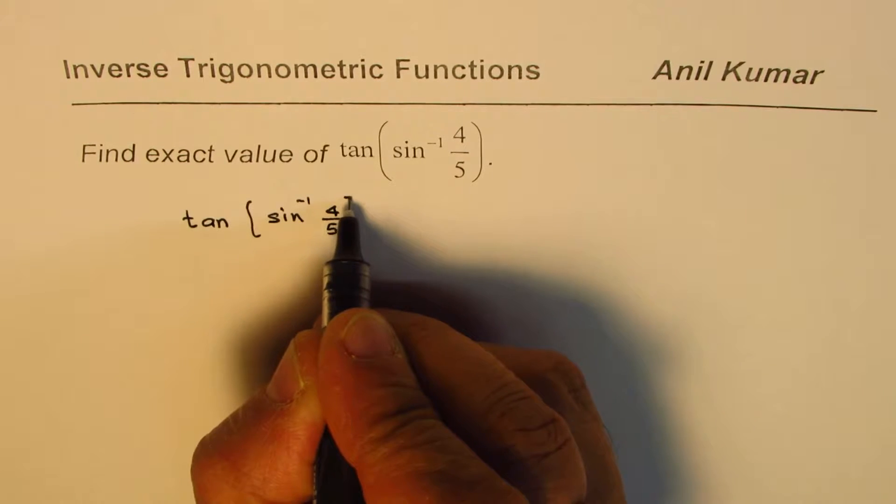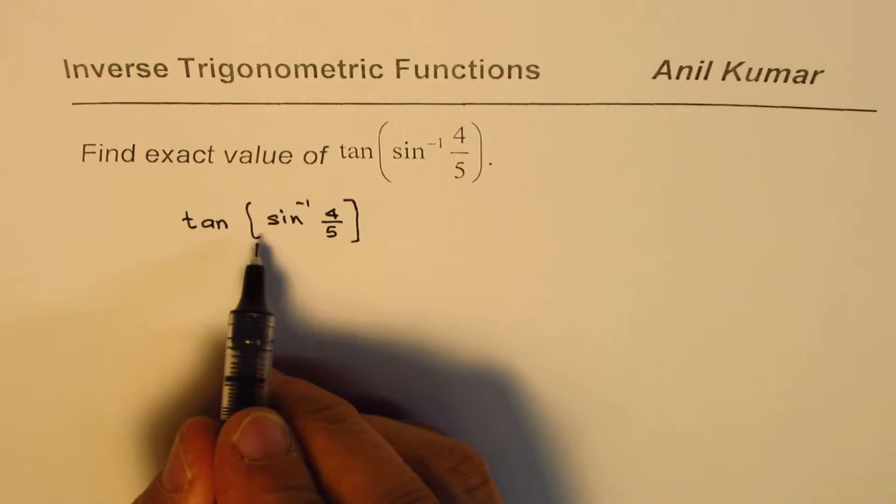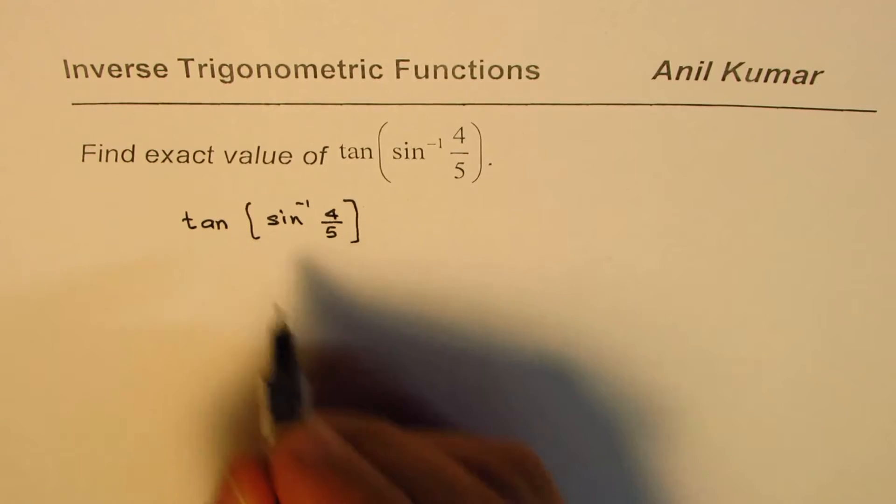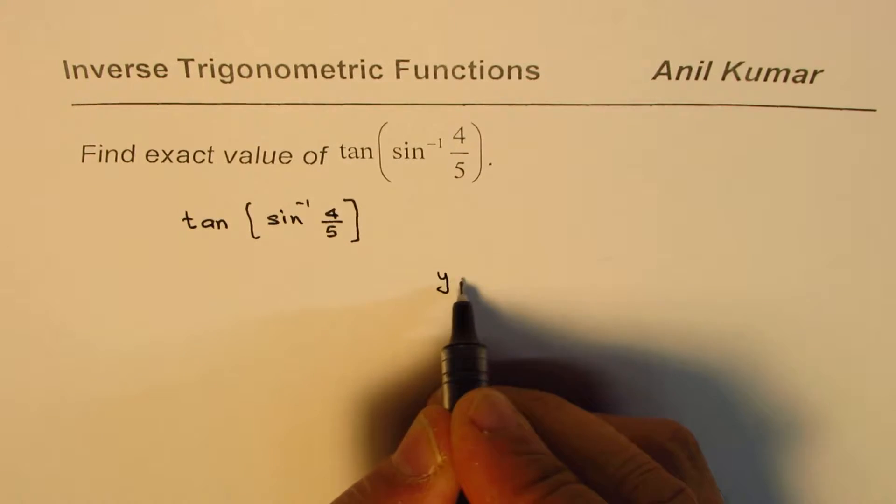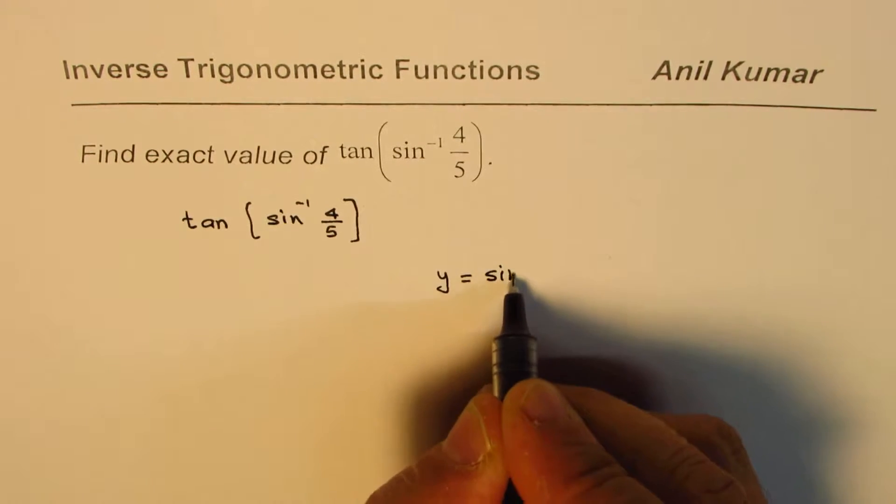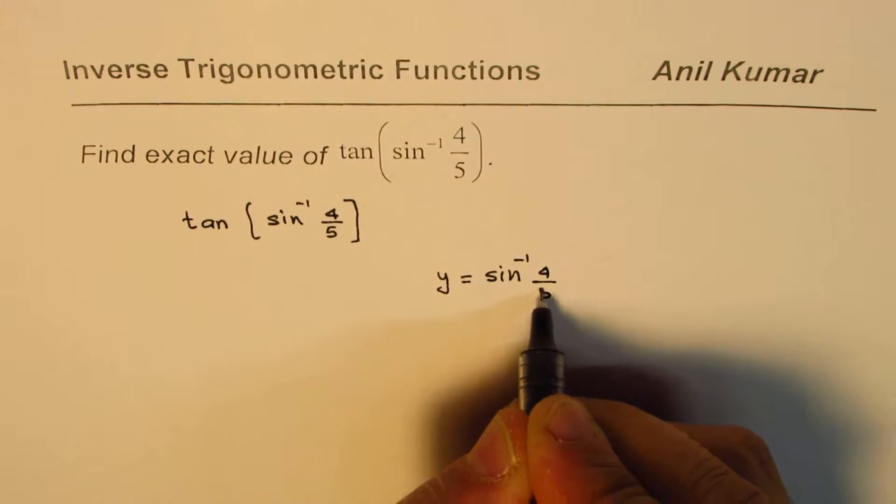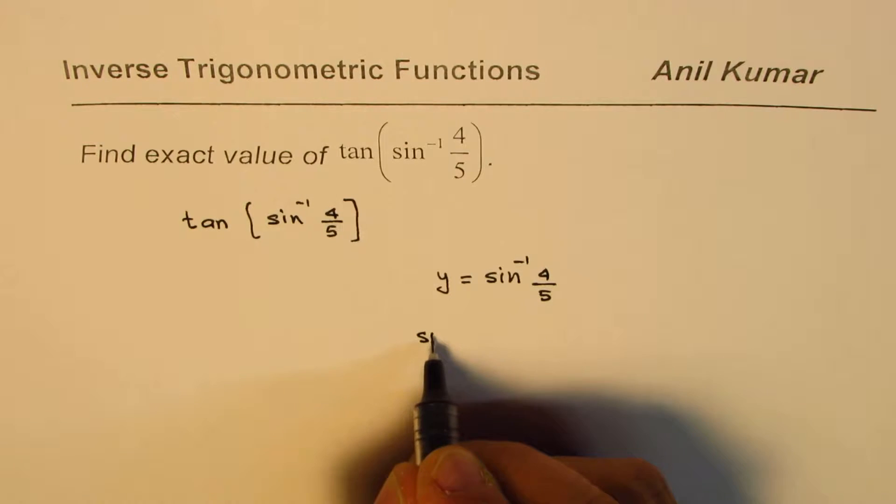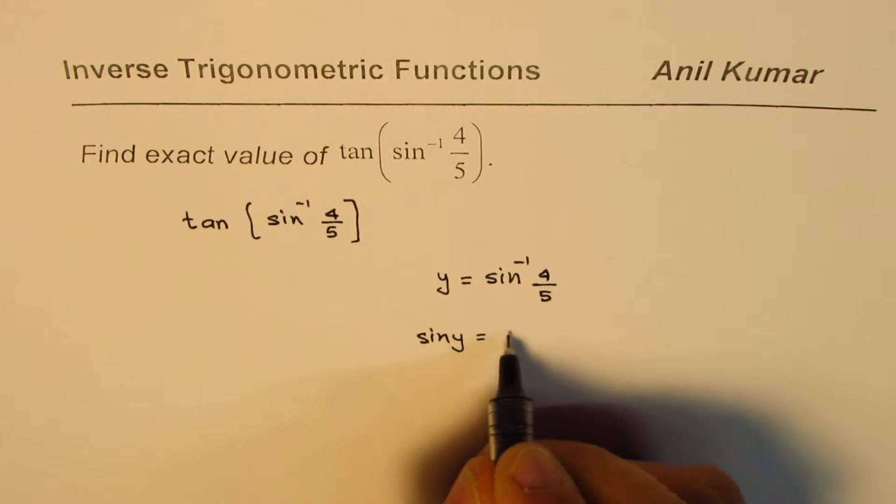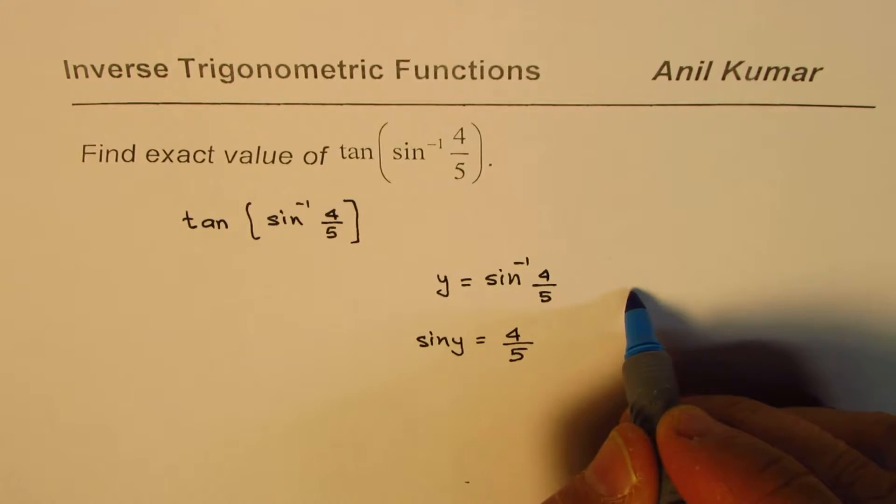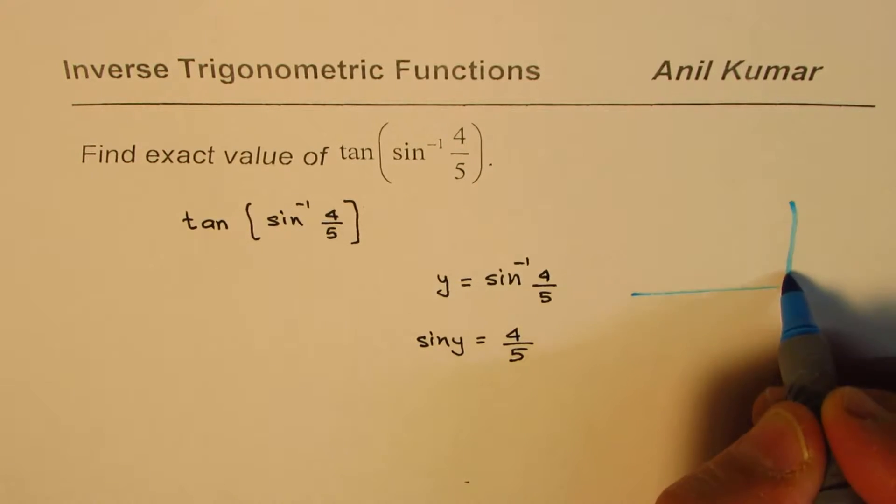Our strategy is to write sin⁻¹(4/5) as y. So what we will do here is write y = sin⁻¹(4/5). In that case, sin(y) = 4/5. Based on this, we can construct a triangle. Let's make a right-angle triangle.